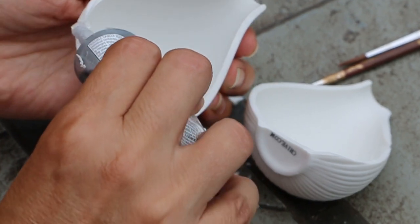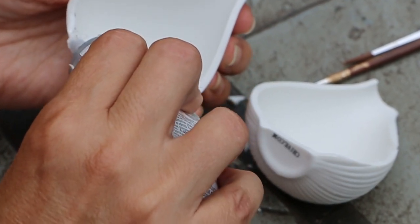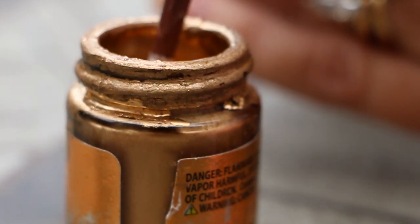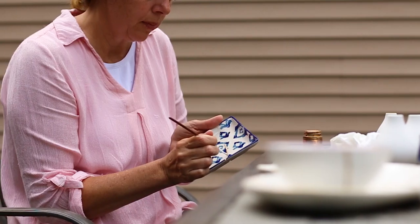I take broken pieces of pottery and I fit them back together. I mend them with glue and then I take gold paint and I paint over the cracks so that they stand out.